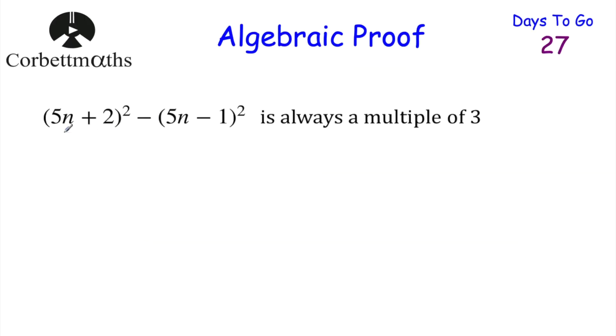Here's a question for you to try. We've got (5n+2)² subtract (5n−1)². You've been asked to prove it's always a multiple of 3. Can you prove this is always a multiple of 3?